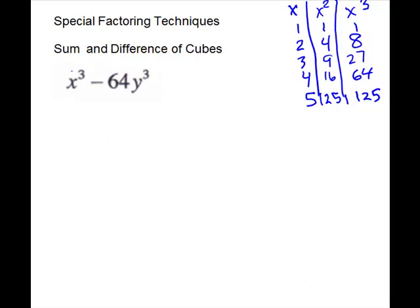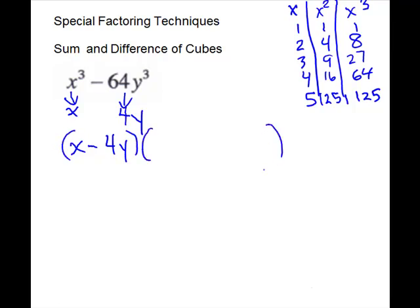Another problem — it is two terms, exponent of three, so we're going to try cubes. Cube root of x cubed would be just x. Cube root of 64y cubed: 64 is a perfect cube, the cube root is four, and a y. So we'll use those pieces with the sign of the problem — that makes the first set of parentheses. Second set will be a trinomial. For our signs: the first sign will be the opposite of that one, so plus. Last one is always plus. Then we'll take all the combinations of our roots. The first one times itself — first one squared. The first one times the second one: x times 4y will be 4xy. And the last one squared: 4y times 4y gives us 16y squared.